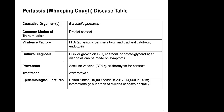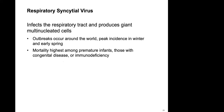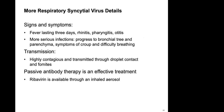RSV (Respiratory Syncytial Virus) infects the respiratory tract and produces giant multi-nucleated cells. Outbreaks occur worldwide, with peak incidence in winter and early spring. It is of particular concern for newborns — mortality is highest among premature infants, those with congenital disease, or immunodeficiencies. Signs include fever lasting three days, rhinitis, pharyngitis, and otitis. More serious infections progress to lower respiratory symptoms and croup. Passive antibody therapy from a parent is often the most effective treatment.